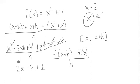Now, as h goes to 0, this becomes 2x plus 1, meaning that the limit as h goes to 0 is 2x plus 1.